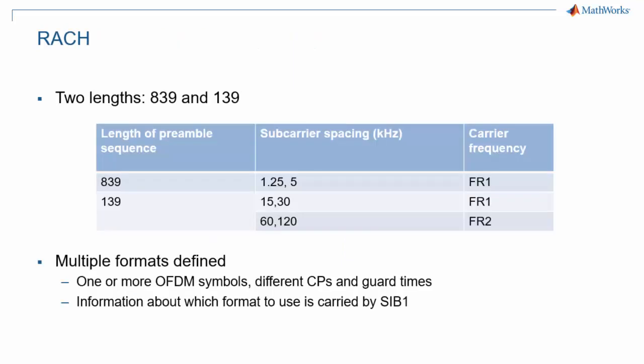There are two possible lengths for the RACH preamble: a long preamble at 839 and a short one at 139. The long preamble is useful in large cells, as the timing uncertainty is larger because of longer propagation delays. Therefore, the long preamble is limited to sub-6GHz 5G transmissions. The short preamble applies to all possible 5G frequencies.